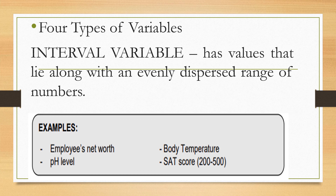Another one is interval variable. When we say interval variable, it has values that lie along an evenly dispersed range of numbers. Examples include employee net worth, pH level, body temperature, and SAT score (200 to 500). For instance, body temperature from 36 to 40 — we don't know exactly where a person's temperature will fall when tested. It could be 36, 37, 38, 39, or 40. That is why it is called interval variable.